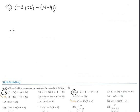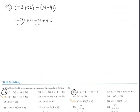Now subtraction. Subtraction is the same, the only difference is when you remove the parentheses for the subtraction you change to the opposite sign. It becomes minus 4 plus 4i. Now combine like terms — real part with real part gives minus 7, and imaginary part with imaginary part gives plus 6i.